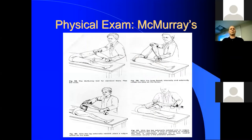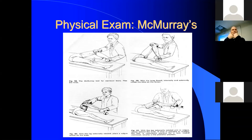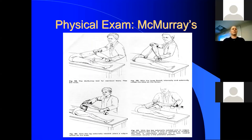McMurray's test for meniscal testing: you're trying to pinch the meniscus between the femoral condyle and the tibial plateau. Bend the knee, apply a valgus force to compress the lateral side, rotate and point the heel in that direction to rotate the tibia, then straighten back out — trying to catch the meniscus between the two bones. For the medial meniscus, apply varus stress; for the lateral meniscus, apply valgus stress, as you rotate and straighten.